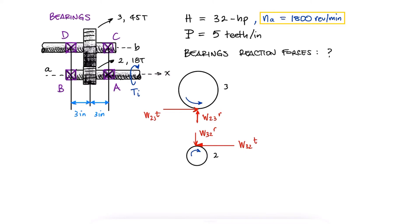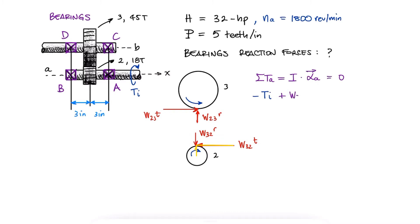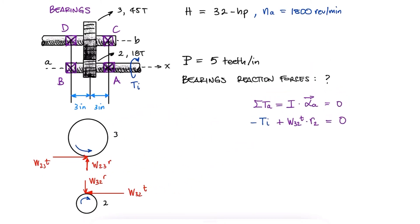For shaft A to keep a constant angular velocity, its angular acceleration must be 0, and therefore its sum of torques should also be 0. The negative input torque plus the positive counterclockwise torque that W32T is generating on gear 2 should therefore be equal to 0.